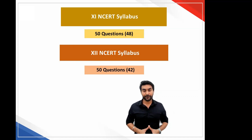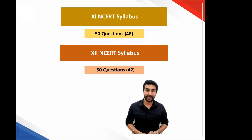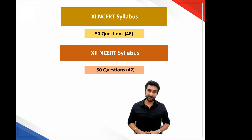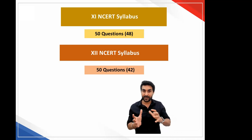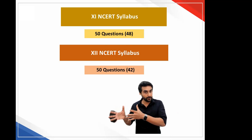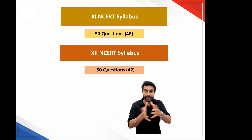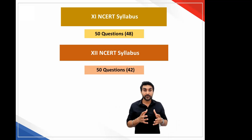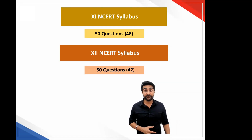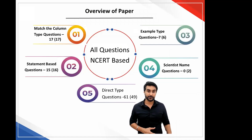For your information, if you see in the slide, the numbers given in brackets are the 2020 distribution of marks. This would help you to identify and understand how the papers have changed over the period of 2020 to 2021. The distribution this year in 11th and 12th has been more even compared to other years.